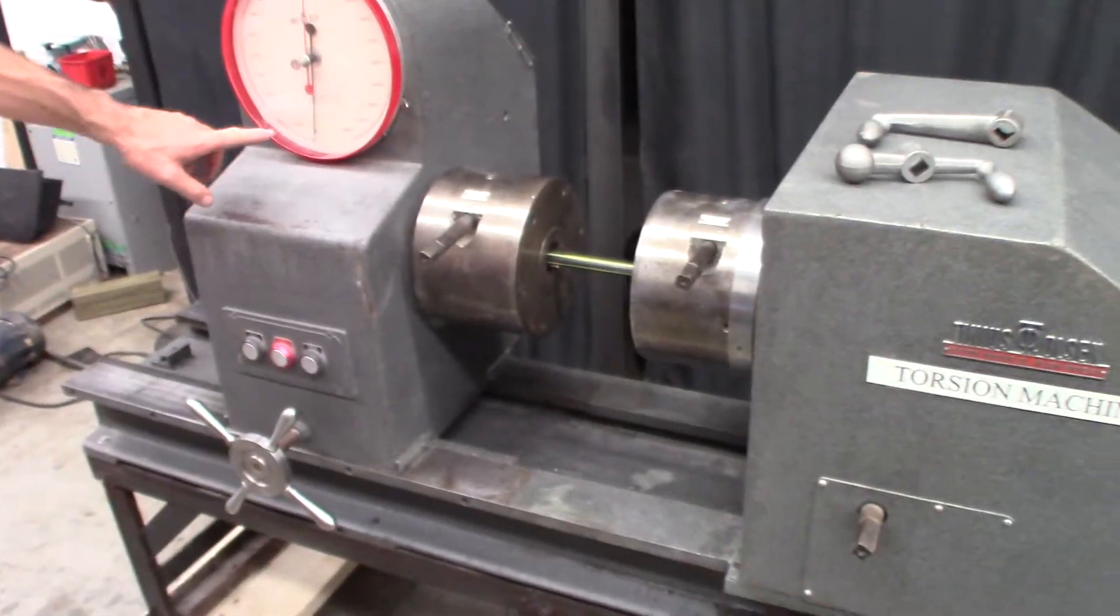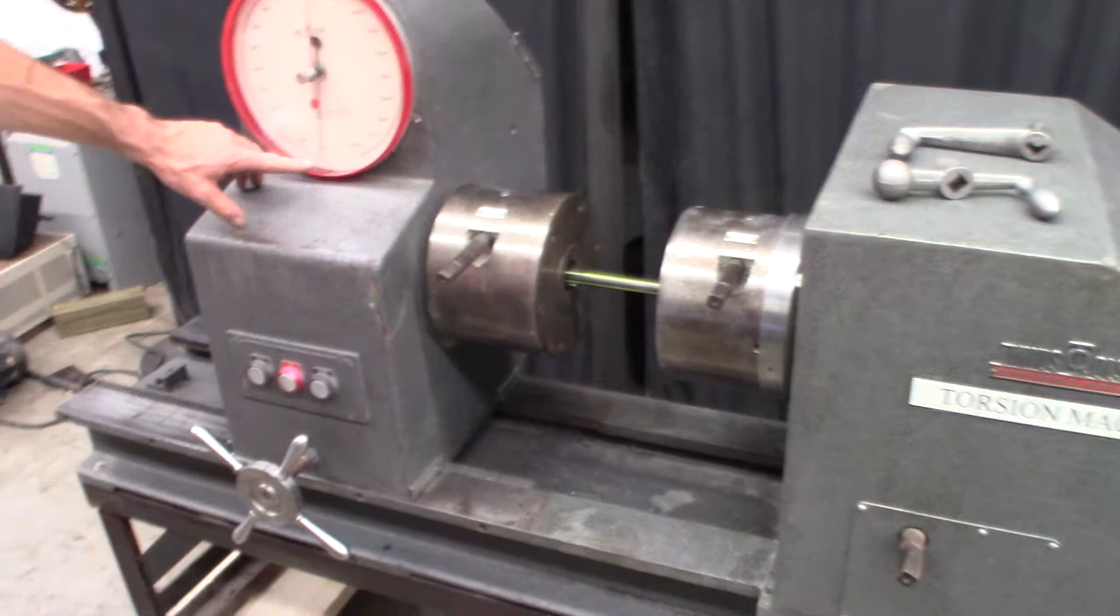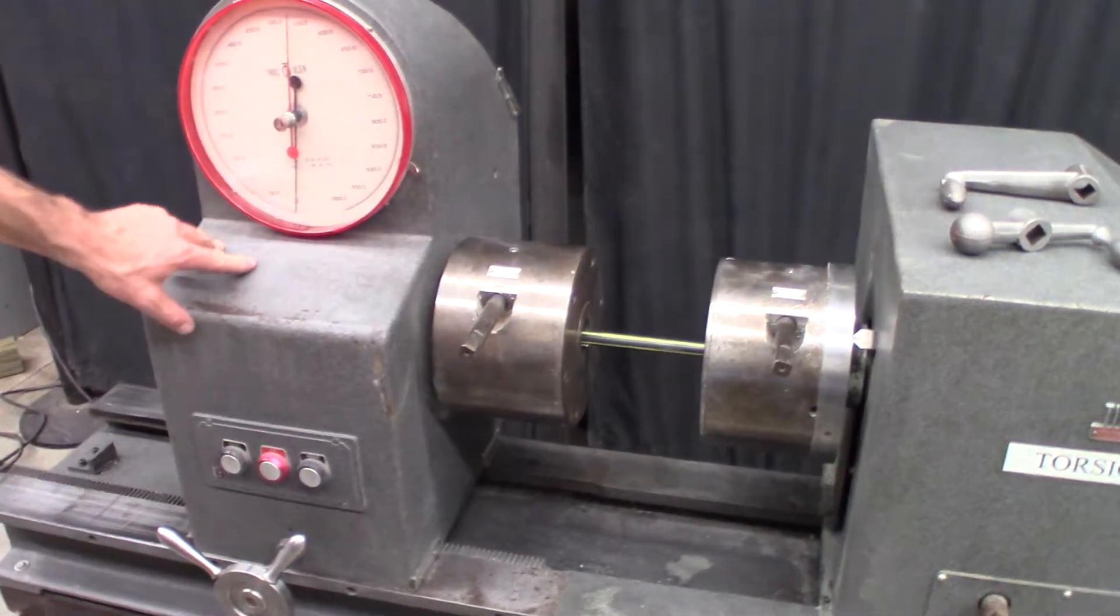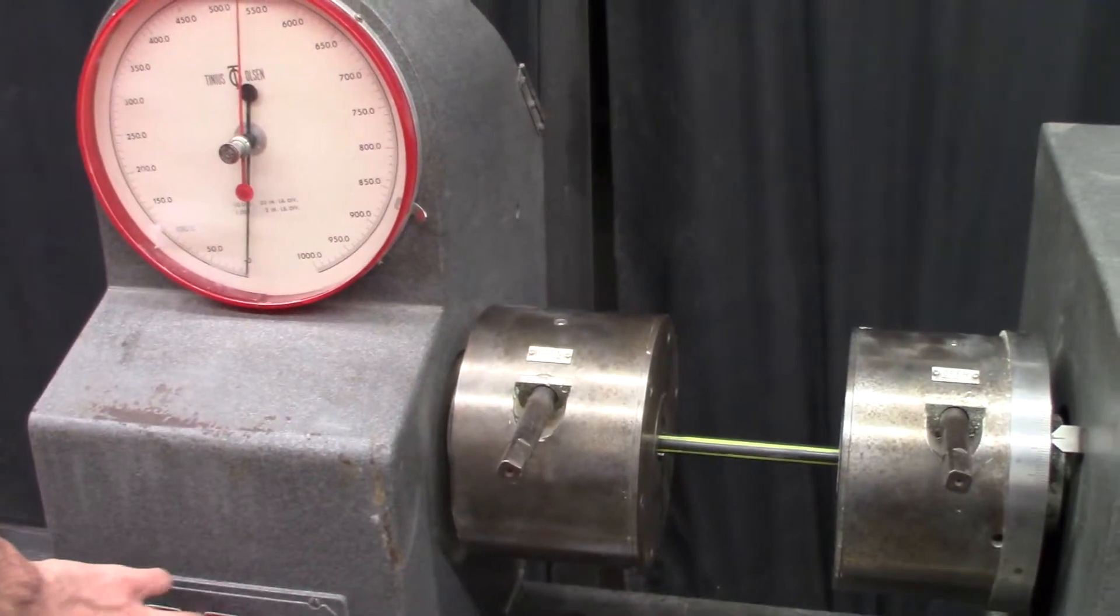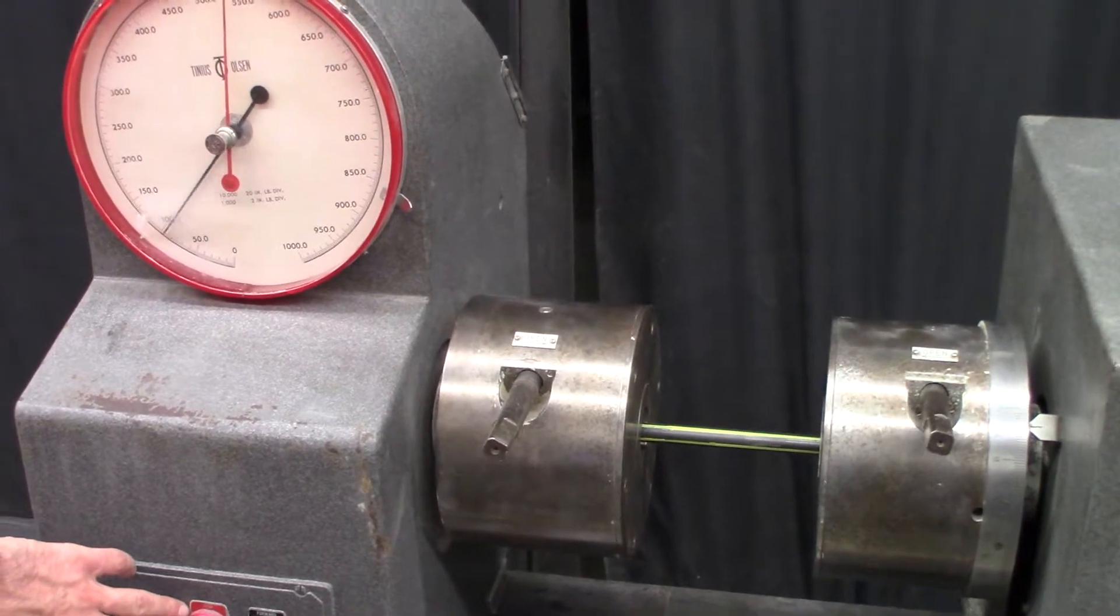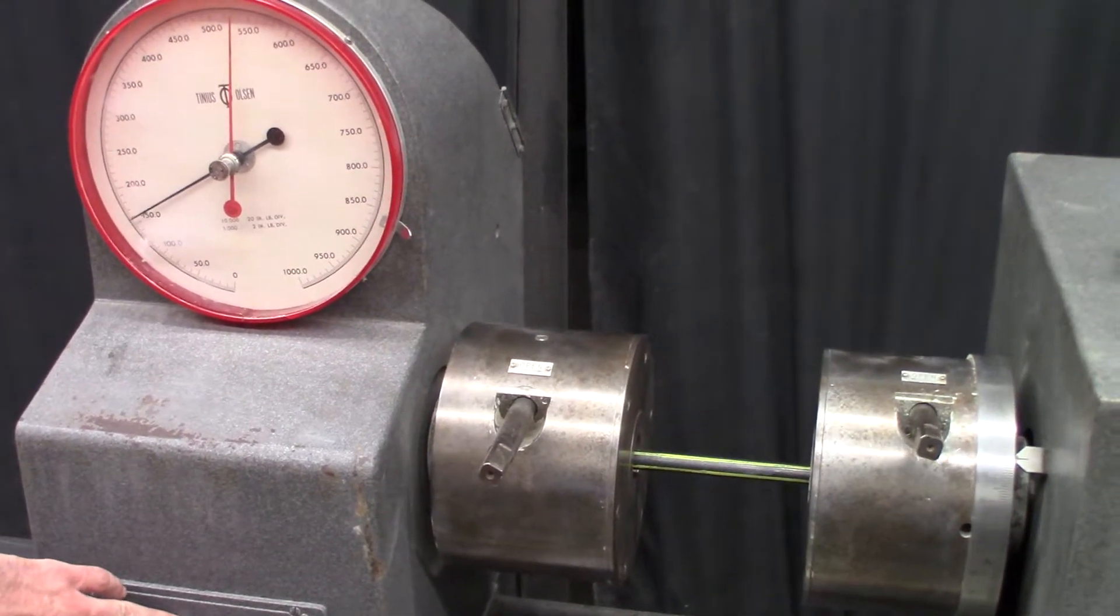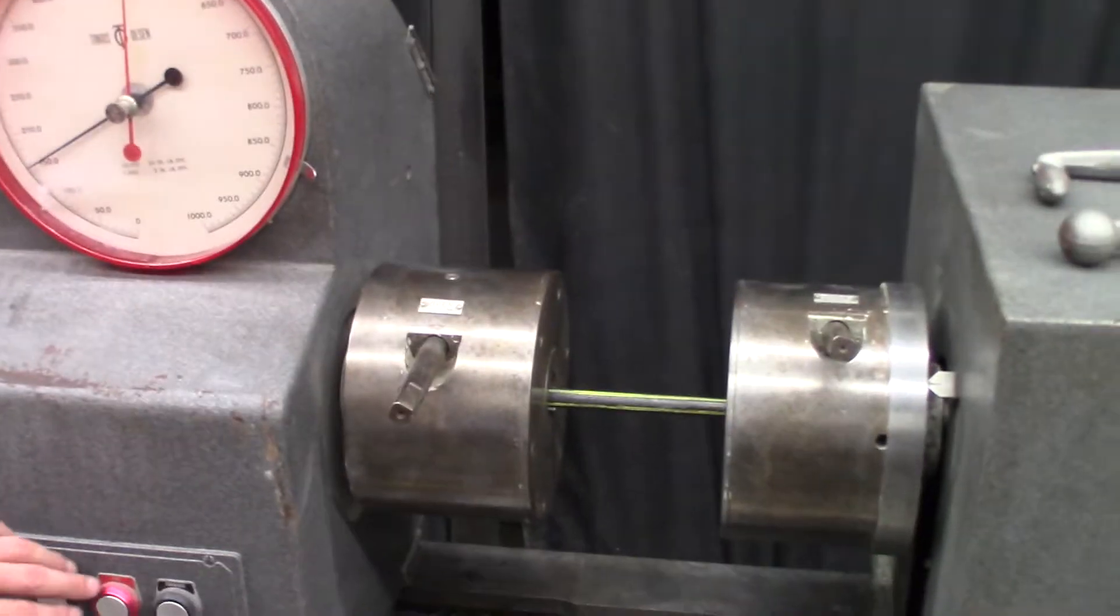Alright, and now we'll go ahead and start it and we'll start to see some force applied here on the gauge. You can see the surface crack starting to twist.